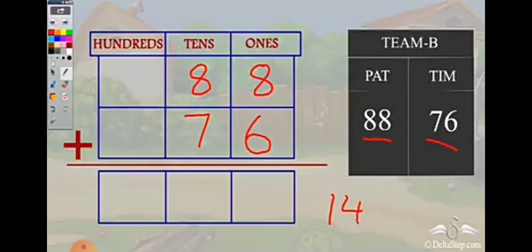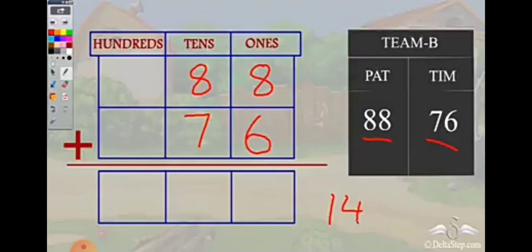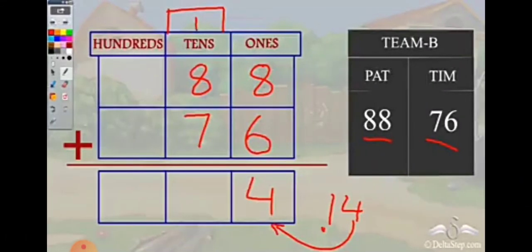So 6 plus 8 is 14. Should we write 14 as it is? No — we write only the 4 digit in the ones place, and the 1 makes a new room in the tens place as a carry over.